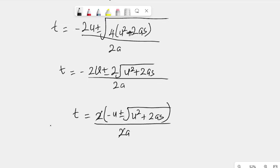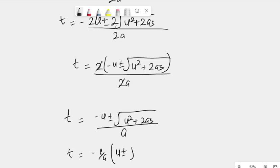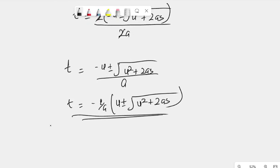So, our final answer therefore is T equal to minus U plus or minus root U squared plus 2AS all over A, which you can write as minus 1 over A times U plus or minus root U squared plus 2AS. Yes, and that brings us to the final solution to this question, very interesting one. Thank you.